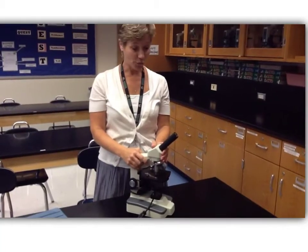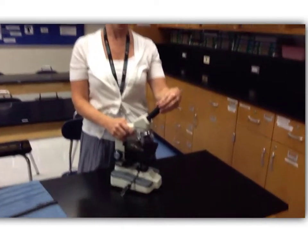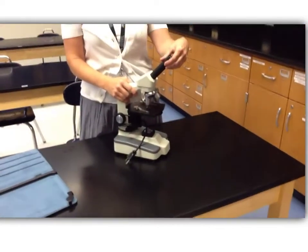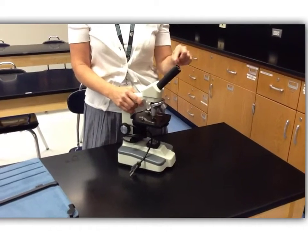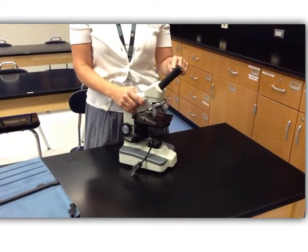There are several parts of the microscope that you're going to need to know. The first is up here at the top, it's called the eyepiece, but its official name is the ocular lens, and it has a lens in it that magnifies 10 times.